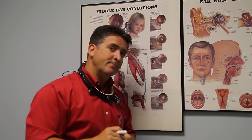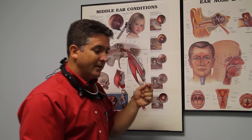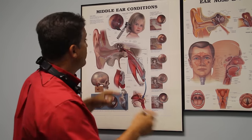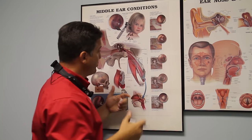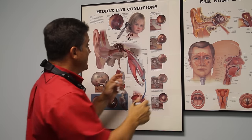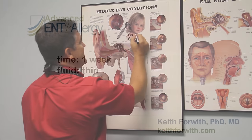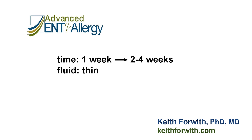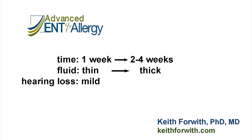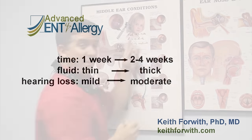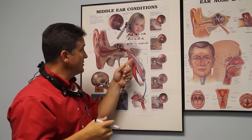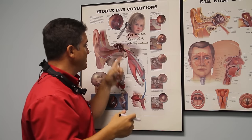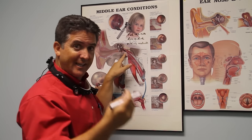Here's the thing about middle ear fluid: as it sits there over time, it gets thicker and thicker. If we looked at fluid that's been in the ear for one week, we would find that fluid is very thin, and that thin fluid produces a little bit of muffling of the hearing. If that fluid can't drain down and out the eustachian tube and it sits there for two to four weeks, that fluid goes from thin to thick, and a very mild hearing loss becomes a moderate hearing loss. We have the best chance of draining that fluid through the eustachian tube when it's thin. As it gets thicker, there's less and less chance because it's harder to drain a thicker fluid down a swollen and small eustachian tube.